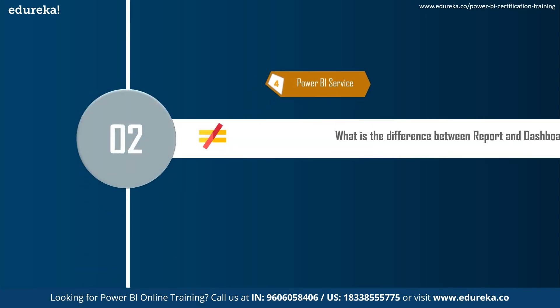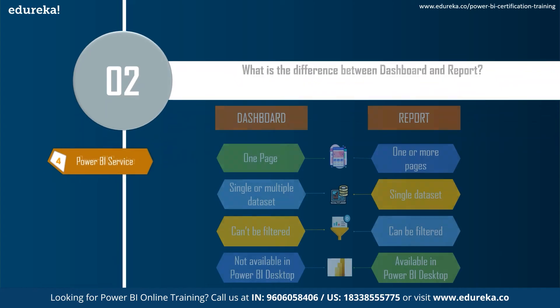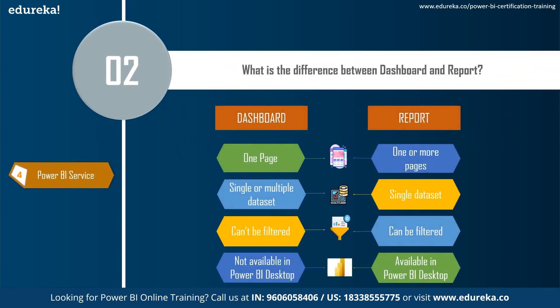The next question is: what is the difference between a report and a dashboard? Dashboards are single-page, whereas reports can be multiple pages. Dashboards can use single or multiple data sets, but reports use only a single data set. Dashboards cannot be filtered, whereas reports can. Dashboards are not available in Power BI Desktop — only in the Power BI online service — whereas reports are available in Power BI Desktop.